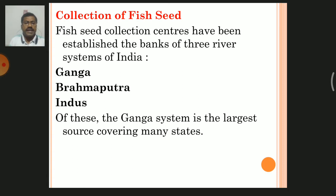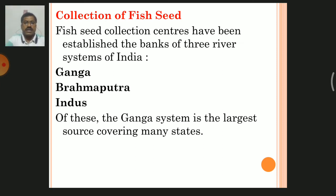In India, the Ganga, Brahmaputra, and Indus river systems are the main sources, and of these the Ganga system is the largest source, covering many states. The Ganga river passes through different states of India and is the major source of fish seeds.